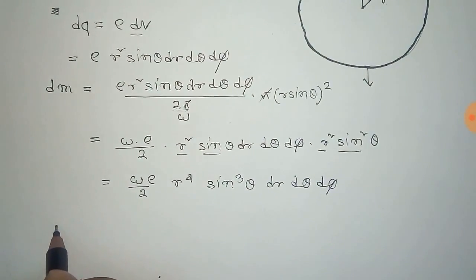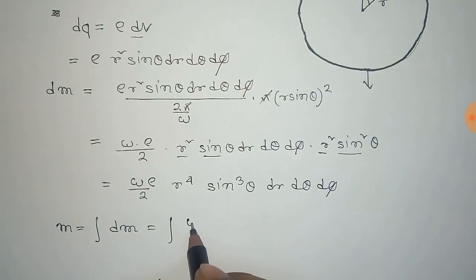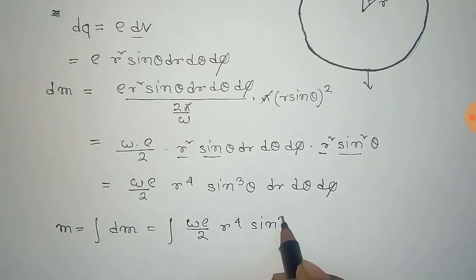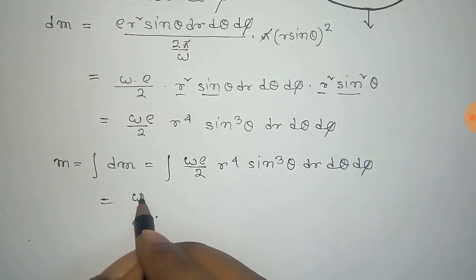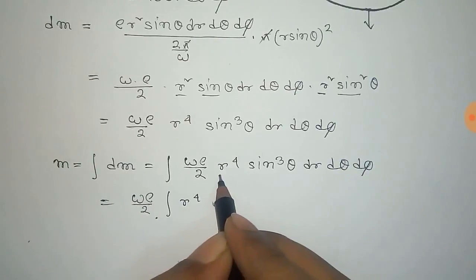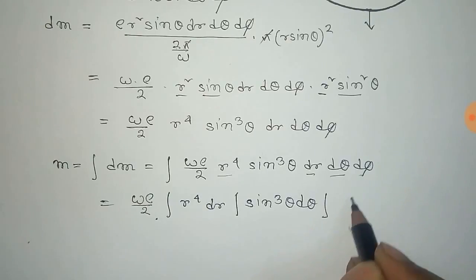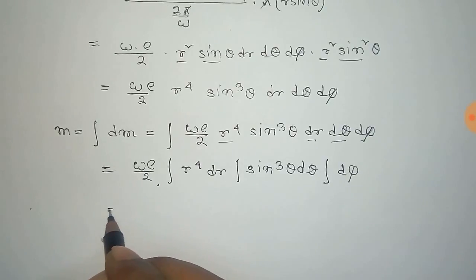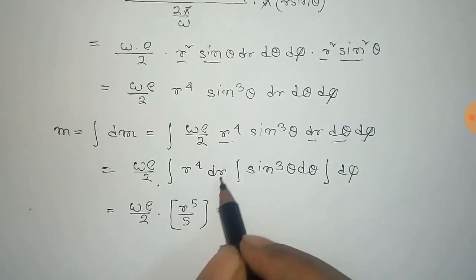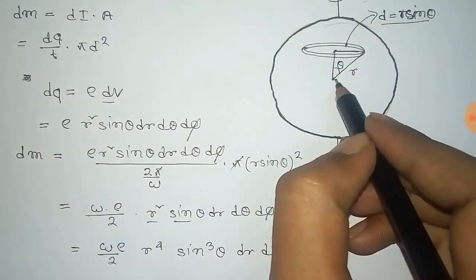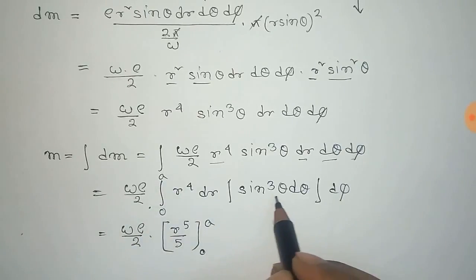The total magnetic moment for the sphere is M equal to the integral of dM, which is the integral of omega rho by 2 times r to the power 4 sine cubed theta d theta d phi. This constant term comes out of the integral, leaving the integral of r to the power 4 dr, the integral of sine cubed theta d theta, and the integral of d phi. The limit of r is 0 to a, where a is the radius of the sphere, and the limit of theta is 0 to pi.